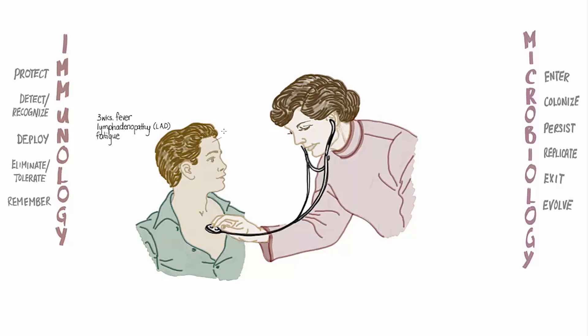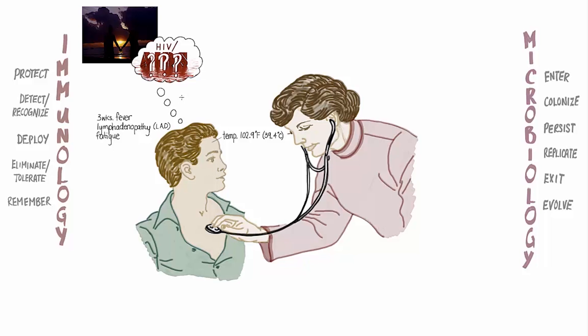The nurse recorded a temperature of 102.9 degrees Fahrenheit or 39.4 degrees Celsius. As he waited for the physician, his mind raced with the results of his recent internet searches. He had read that prolonged fever and swollen lymph nodes could be caused by infections like HIV. Four weeks ago, Joel had sexual intercourse for the first time with a student he'd met at an athlete social, and he'd been increasingly worried that he'd contracted HIV, which finally brought him into the clinic.